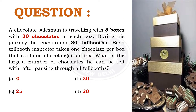A chocolate salesman is traveling with 3 boxes of 30 chocolates each. During his journey, he encounters 30 tollbooths. Each tollbooth inspector takes 1 chocolate per box that contains chocolate as toll. What is the largest number of chocolates he can be left with after passing through all tollbooths?